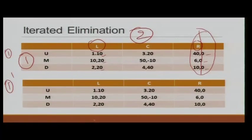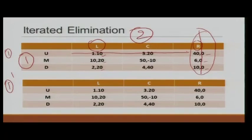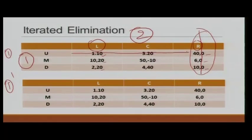In fact, there are two dominated strategies. In the reduced game, M strictly dominates U and M strictly dominates D. We can eliminate U. Why? Because player 2 is rational and will not play R; player 1 knows player 2 is rational due to common knowledge; so player 1 knows player 2 will never play R and we remove that part. Player 1 being rational means he will never play U given M strictly dominates it.